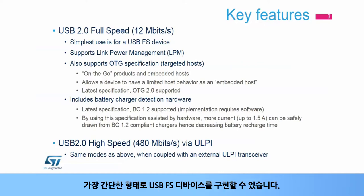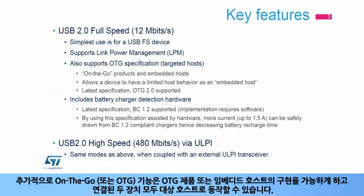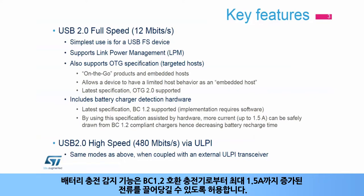In the simplest form, a USB FS device can be implemented. Built-in support for link power management adds enhanced power modes on top of the USB 2.0 specification. In addition, the on-the-go or OTG functionality enables implementation of an OTG product or an embedded host, both of which have the capacity to behave as a targeted host. The battery charger detection function allows for increased current to be drawn from BC 1.2 compliant chargers up to 1.5 amps.